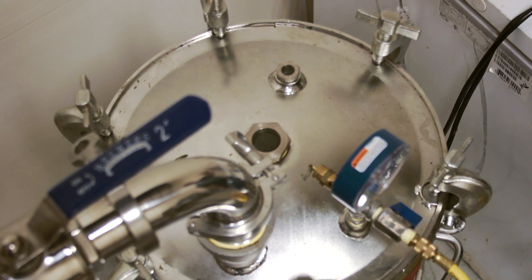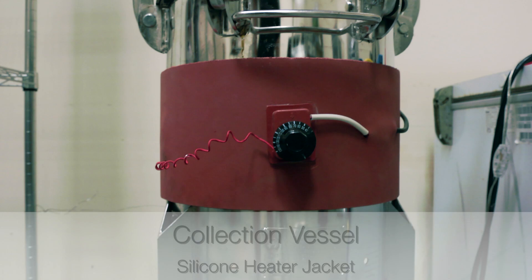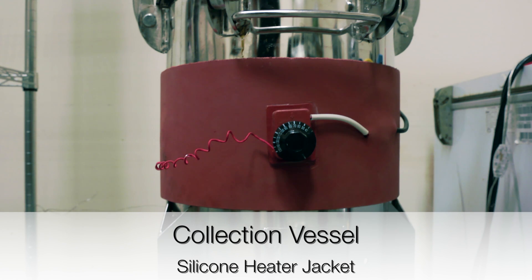The collection vessel also has a pressure gauge and a blow-off valve and a quarter inch ball valve. The collection vessel has a silicone heater jacket.